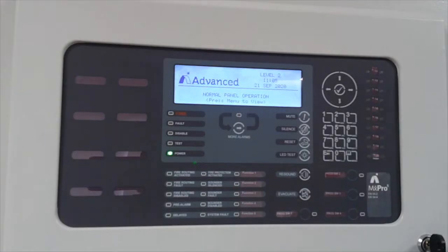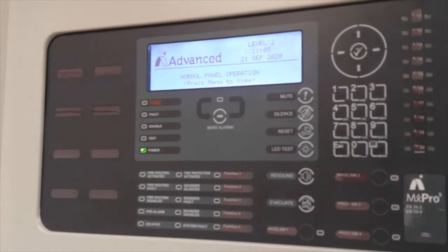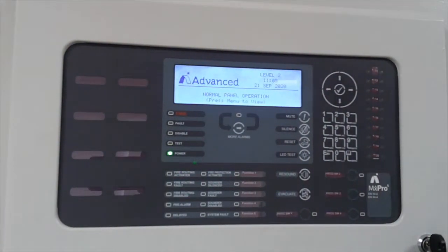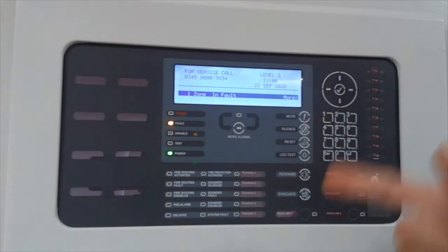We all like to see a control panel displaying normal panel operation. However, in the unlikely event you do have an earth fault on the system, that display will change. When your earth fault occurs, the panel's at level two menu and it will buzz in a fault condition. You can press the mute button - you're not affecting the operation of the system, just silencing the buzzer.